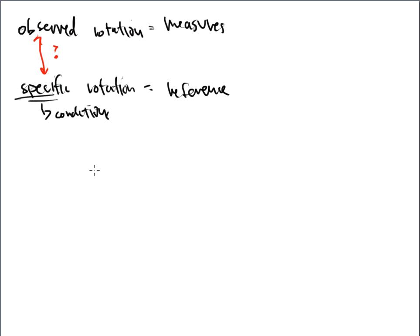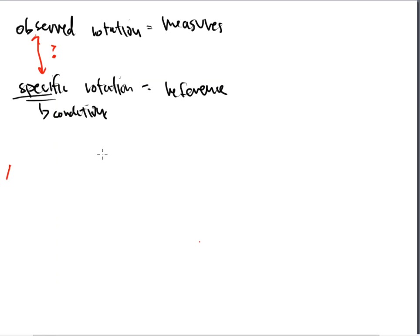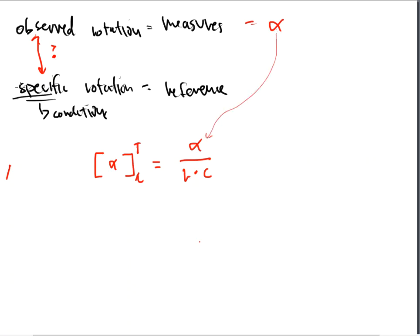So this is what the equation looks like. A lot of times they'll start with a bracket, put the little alpha on the inside, close the bracket, and put a big T up here and a little lambda down here. And that's equal to an alpha, which is not in a bracket, divided by L times C. That's the equation you will have to use in this laboratory. The observed rotation is alpha — that's the number plugged into this equation. The specific rotation is the alpha in the brackets.